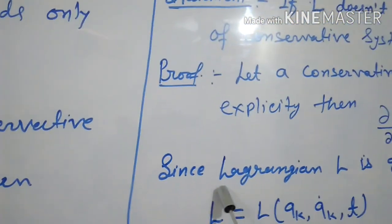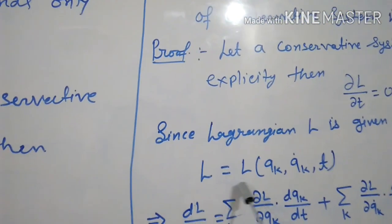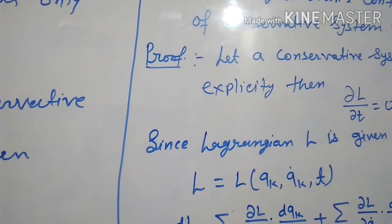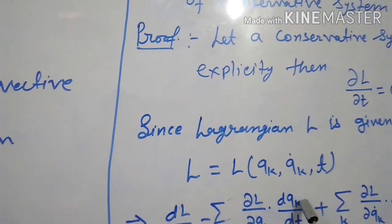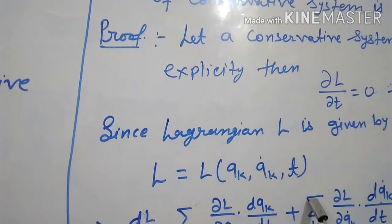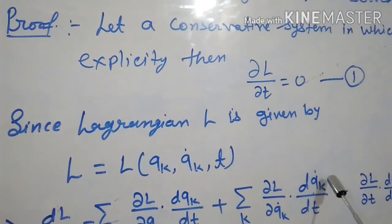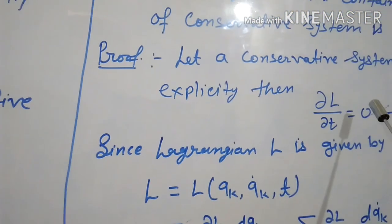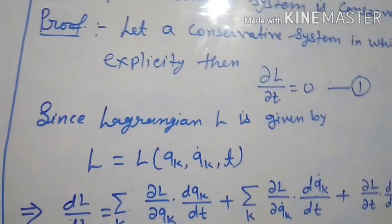Now, since the Lagrangian function L is given by L of QK, QK dot, and t, that implies dL upon dt equals summation K of del L upon del QK into dQK upon dt, plus summation K of del L upon del QK dot into d QK dot upon dt, plus del L upon del t. But by equation one, del L upon del t equals zero, so this term is zero.